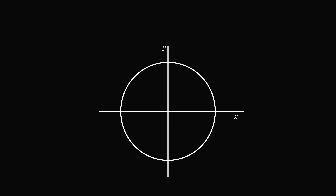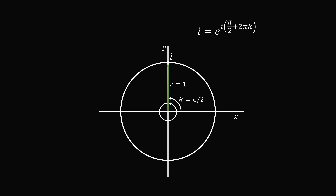Now let's consider the number i. Here r will be equal to 1 and the angle theta will be equal to pi over 2, or any 2pi multiple of it. So i is equal to e to the power of i times (pi over 2 plus 2pi k). For convenience, we take the principal value where k equals 0, giving us i is equal to e to the power of i pi over 2.